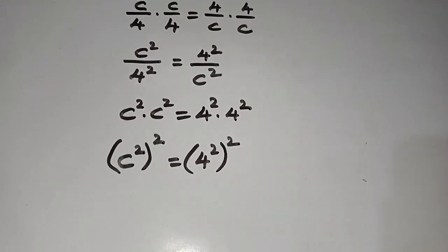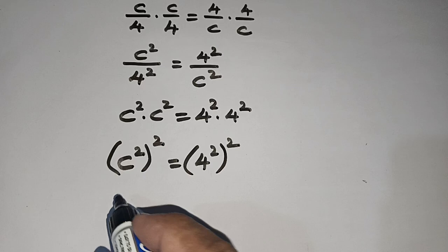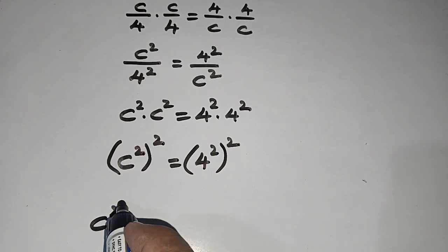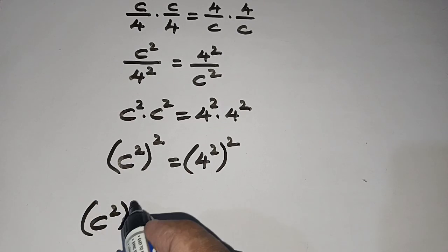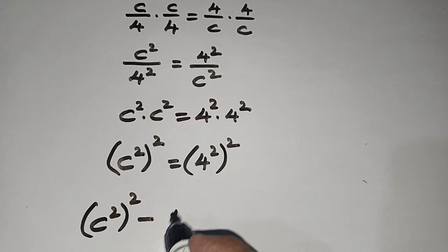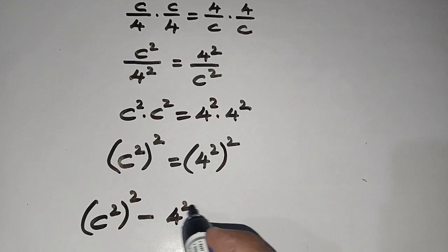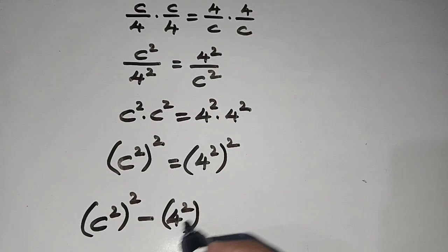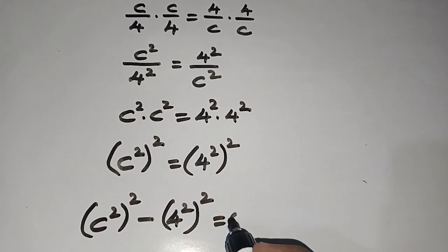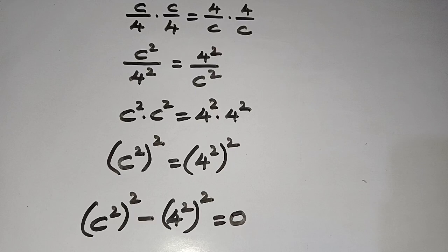Now bringing all terms to one side, so we have (c²)² minus (4²)² is equal to 0.